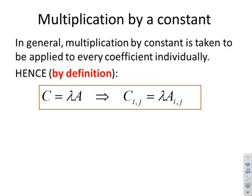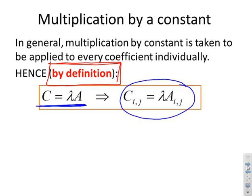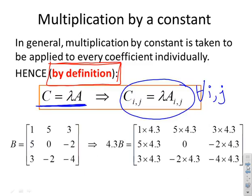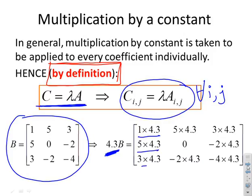Here's a more formal definition. I've emphasized this is a definition. If you write C equals λ times A, that's the same as writing every coefficient C_ij equals λ times A_ij, for all i and j. That's the definition. Here's an example. I've given you a B, a 3 by 3 matrix. What does it mean if I write 4.3B? I've multiplied every element separately by 4.3. That's the definition, that's what you do.